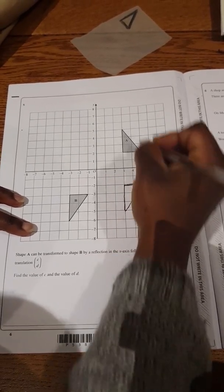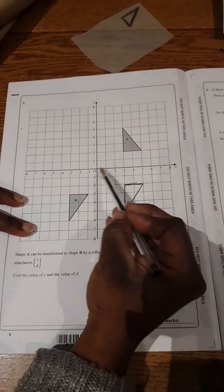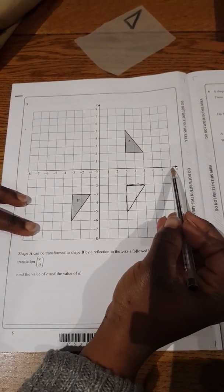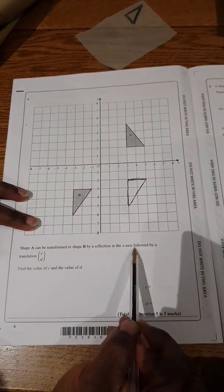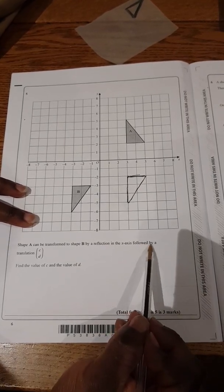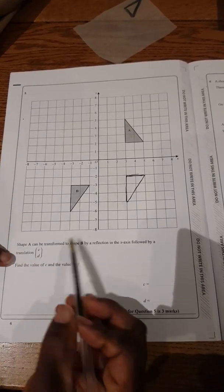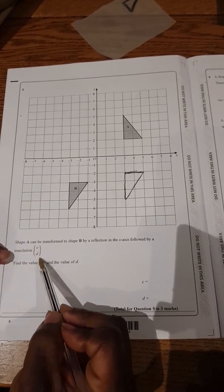Now this shape A has been reflected, meaning it's been flipped over using that x-axis as the mirror line. However, after it's been reflected, you have to translate it with these numbers here, CD. This letter CD represents numbers.